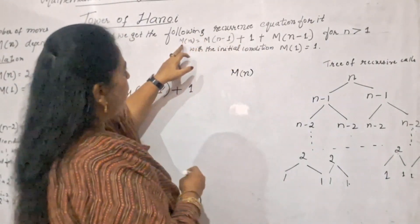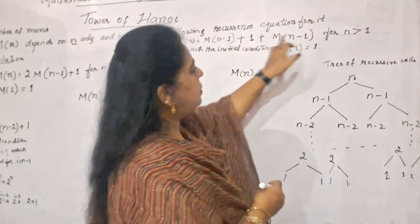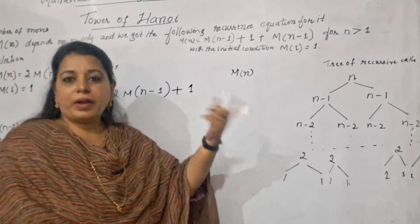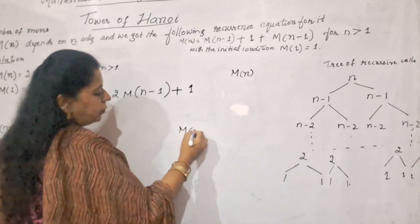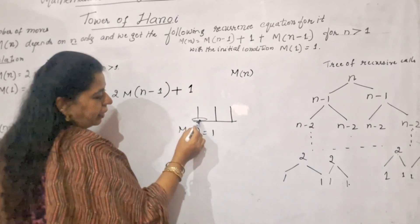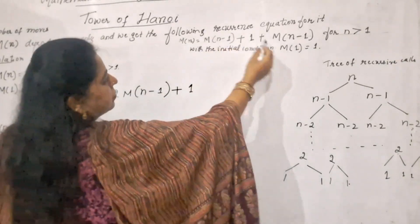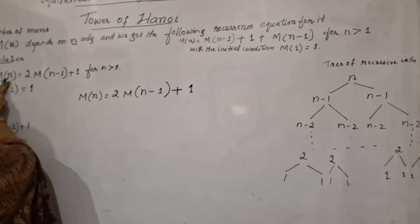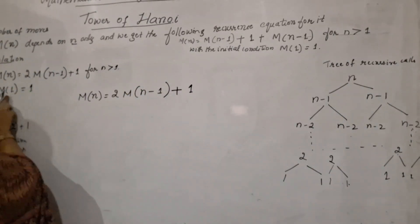For our algorithm, for the Tower of Hanoi, to move N disks we require N minus 1 moves, plus 1, plus N minus 1 moves. So those three steps are written here. With the initial condition M(1) = 1, meaning the number of moves required to move one disk from source to destination is only one move. So M(N) = 2M(N-1) + 1 for N greater than 1, and M(N) = 1 if N equals 1. This is the recurrence equation.